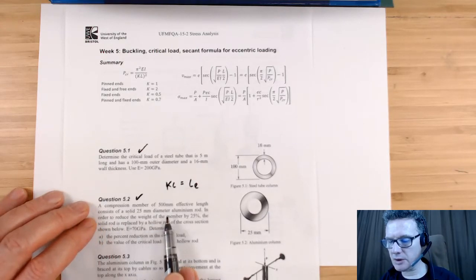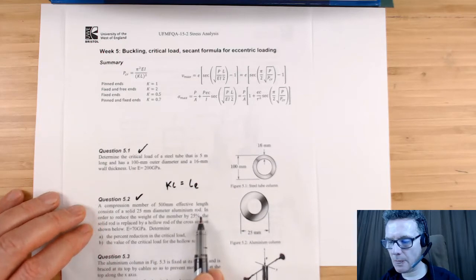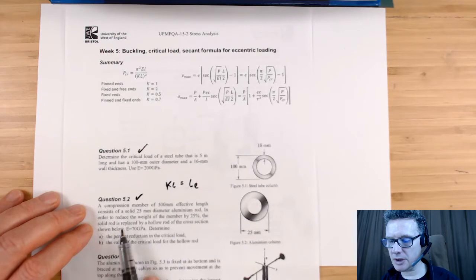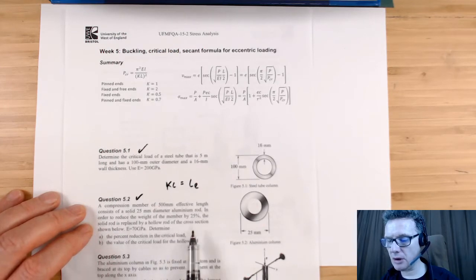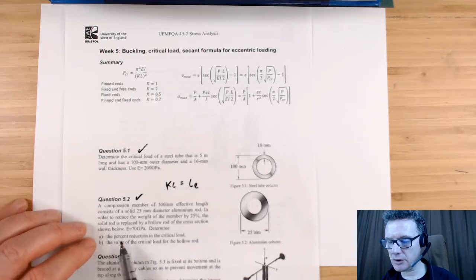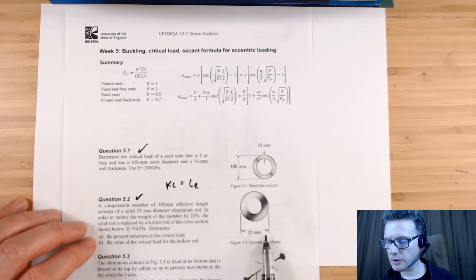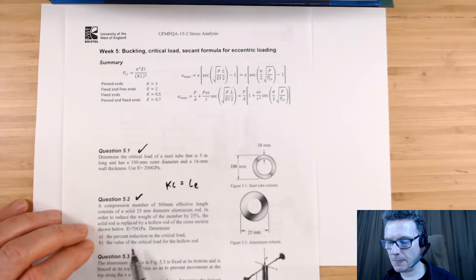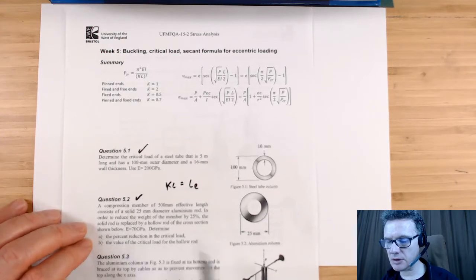It's a 25 millimeter diameter aluminum rod. In order to reduce the weight of the member by 25%, the solid rod is replaced by a hollow rod of the cross-section shown. So originally we've got something that's 25 millimeters in diameter, and we've got Young's modulus.